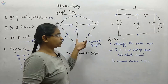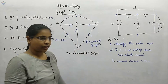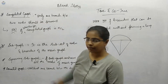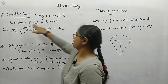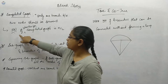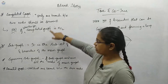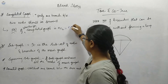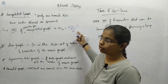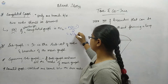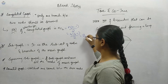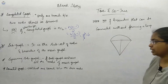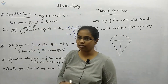Now we will see some definitions — completed graph and non-completed graph. A completed graph means only one branch between any two nodes should be present. The number of branches in a completed graph is given by NC2, that is N×(N−1)/2. With 4 nodes: 4×3/2 = 6 branches, which matches what we had in our graph.